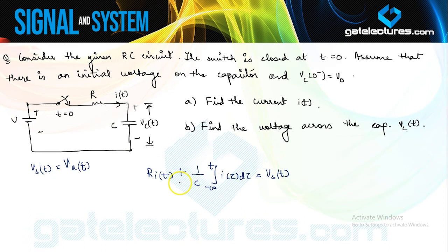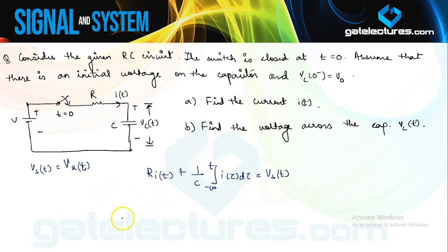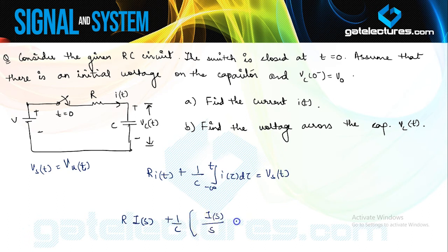Trying to find I(t) directly from this equation would be very complicated. So we take the unilateral Laplace transform of this equation. Taking the unilateral transform, we obtain: R·I(s) + (1/C)·[I(s)/s + (1/s)·...] equals V/s. We have seen this integration property already — the integration is from minus infinity to t.